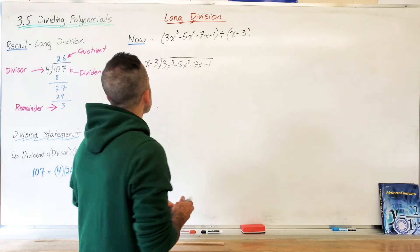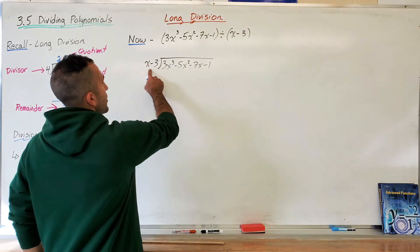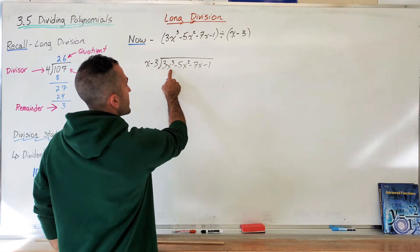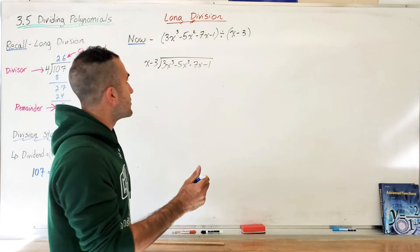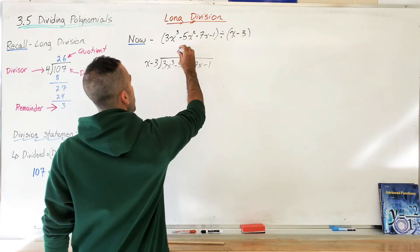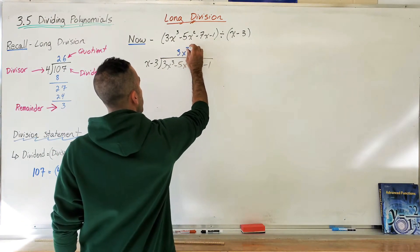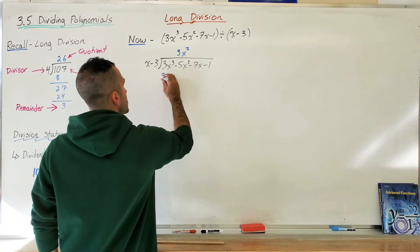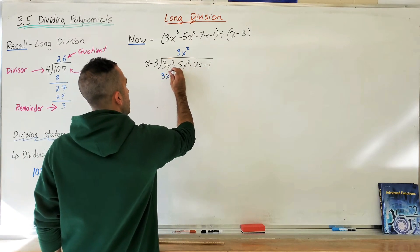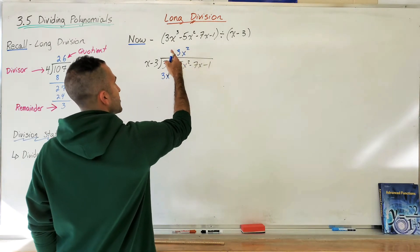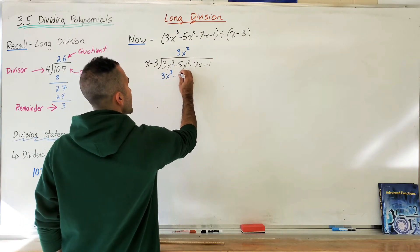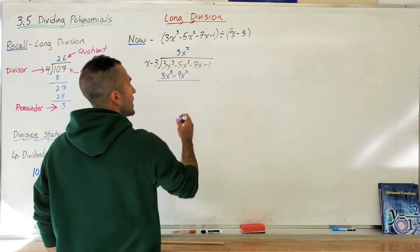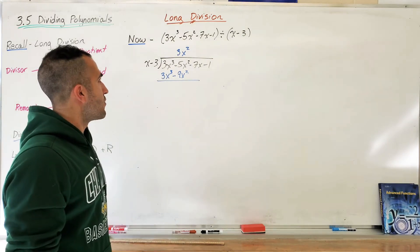I need to figure out what multiple of x minus 3 goes into the first two terms. I use just the first term: how do I turn x into 3x³? It needs a 3 and an x². So I multiply x by 3x² to get 3x³, and put 3x² up in the quotient. Now multiplying 3x² by x minus 3 gives 3x³ minus 9x².